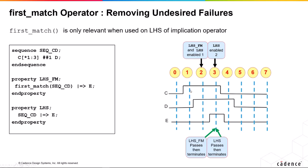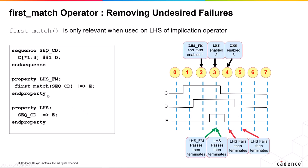Because now we've got C twice followed by D. This sequence on the left-hand side allows between one and three occurrences, and two is obviously between one and three. So we enable the property again. But the first match version will not get enabled again because it had first match on the left-hand side. So because E is not present on this cycle, the property without first match will fail. It passes once, then fails. And because we've got three C's followed by D, we get another copy enabled at cycle four, and again the next cycle it will fail. So without first match, we get one pass and two failures — a result for every possible match of the sequence. With first match, we only match the first one.